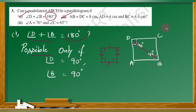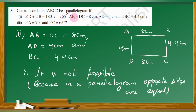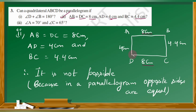Now let's move on to the next question, condition number two. AB is equal to DC is equal to 8 centimetres, AD is equal to 4 centimetres, and BC is equal to 4.4 centimetres. Let us draw quadrilateral ABCD with these measurements. AB equals 8 cm, DC equals 8 cm, AD equals 4 cm, and BC equals 4.4 cm.